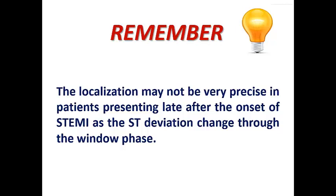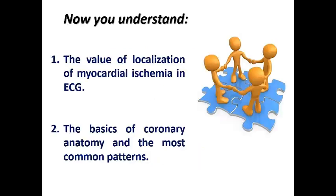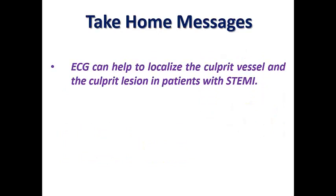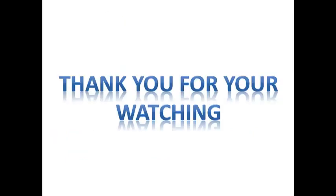We are going to have three separate lectures for anterior STEMI, inferior STEMI, and lateral STEMI, in which we will learn how to localize the culprit vessel and culprit lesion in each one. At the end of today's lecture, we understood the value of localization of myocardial ischemia in ECG and the basics of coronary anatomy. Our take-home message: ECG can help to localize the culprit vessel and culprit lesion in patients with STEMI, whereas ST depression unfortunately does not help to localize as ST elevation does. Thank you very much for watching.